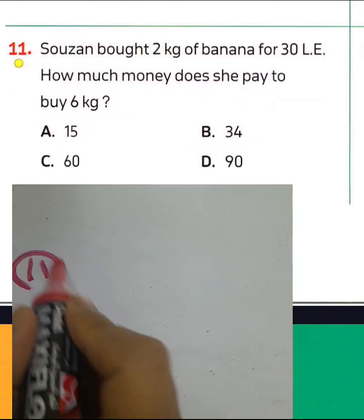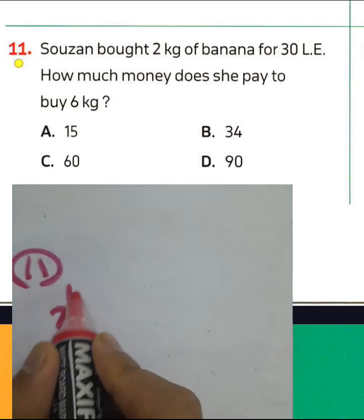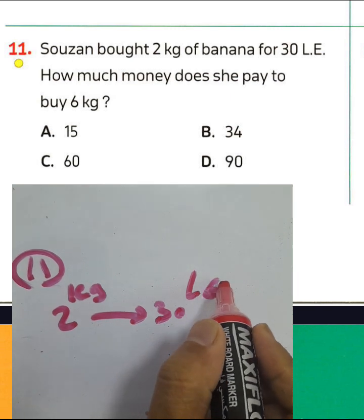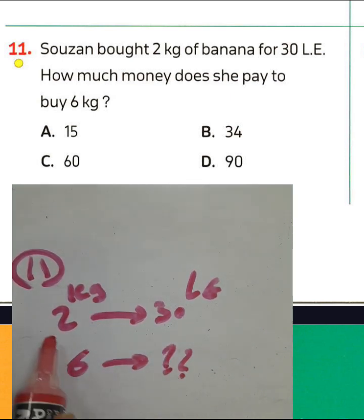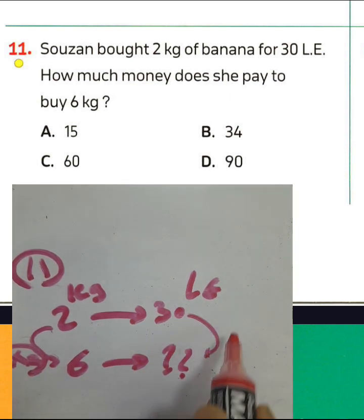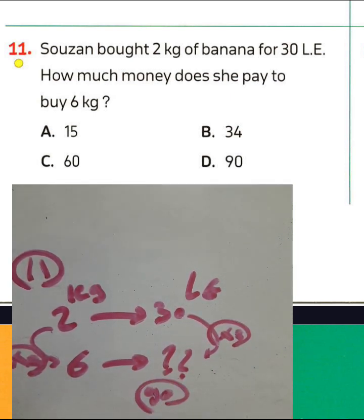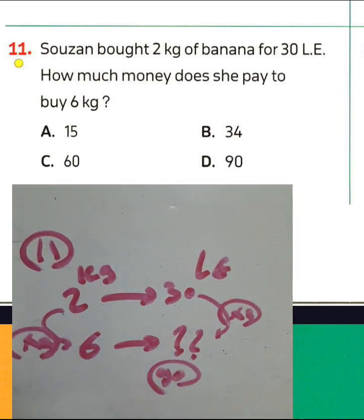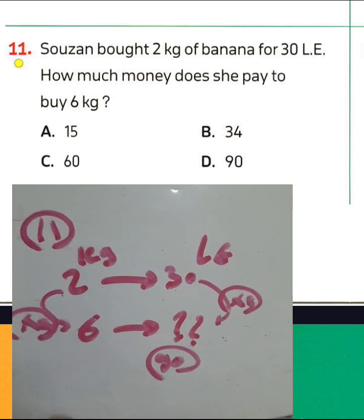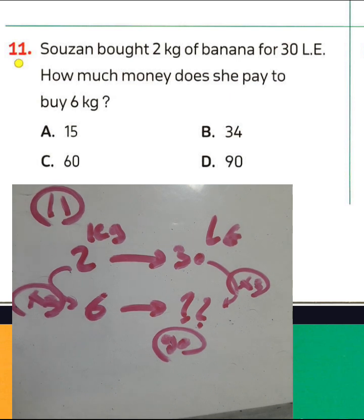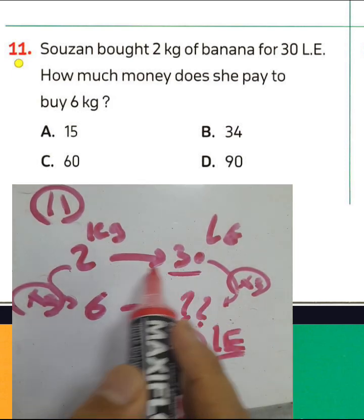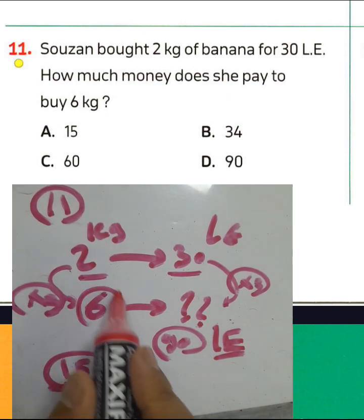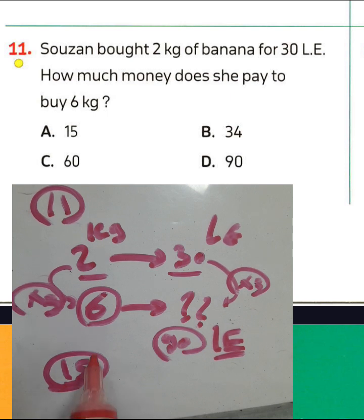Question number 11: Suzanne puts 2 kilograms of bananas for 30 Egyptian pounds. How much money does she pay for 6 kilograms? We know 2 multiplied by 3 equals 6, then 3 times 30 equals 90. Or you can find the price of 1 kilogram: 30 divided by 2 equals 15. Then for 6 kilograms, 6 times 15 equals 90. The result is 90 Egyptian pounds — choose letter D.